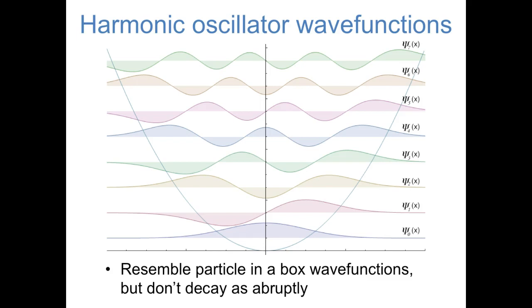Before actually looking at equations for the wave functions and the energies, let's look at a picture of what the harmonic oscillator wave functions look like. You can see that all of these wave functions have the features that we expect. First of all, the wave functions go to zero on both sides as the potential energy goes to infinity. Also, the wave functions are oscillating near the center with different numbers of nodes. And finally, the energies are quantized, with energies increasing as the number of nodes increases. The main difference between these harmonic oscillator wave functions and the corresponding particle in a box wave functions is that the harmonic oscillator wave functions don't go to zero as abruptly on the sides, because the potential energy operator doesn't go as abruptly to infinity on the sides.